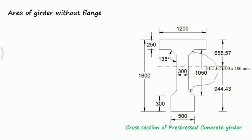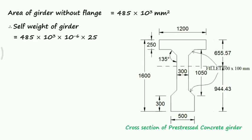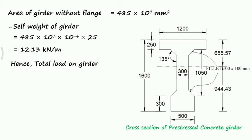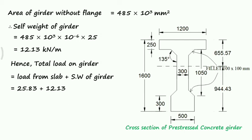The area of the girder is calculated without the top flange, since the top flange is already accounted for in the dead load of the slab. The area of the girder without flange is 485 × 10³ mm². The self-weight of the girder is 485 × 10³ × 10⁻⁶ × 25 = 12.13 kN/m. The total load on the girder is the load from the slab (25.83 kN/m) plus the self-weight (12.13 kN/m), giving a total of 38 kN/m.